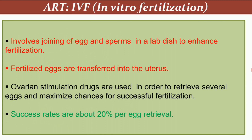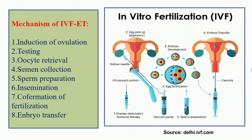IVF involves the joining of egg and sperm in a lab dish to enhance fertilization outside the body. Fertilized eggs are then transferred into the uterus. Ovarian stimulation drugs are used to retrieve several eggs and maximize chances for successful fertilization. The success rate of IVF is about 20% per egg retrieval. The first step of IVF is ovarian stimulation by hormonal therapy, followed by testing and oocyte retrieval.